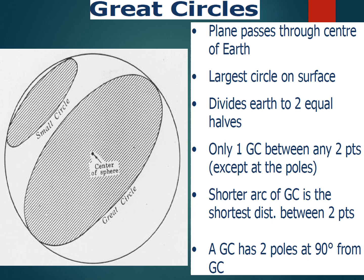A great circle is a circle the plane of which passes through the center of the earth. For example, the equator — if you put a plane through the equator it will cut the circle into two equal halves. Each of the meridians, if you think about them like segments of an orange, will cut the orange into two equal halves. It's the largest circle possible on a sphere.